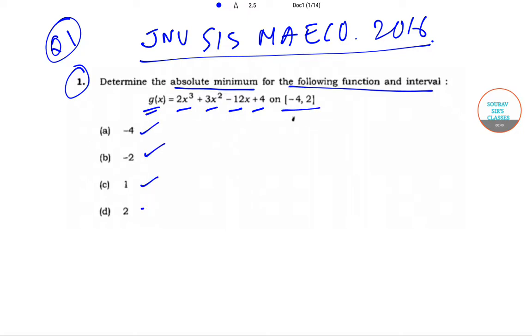So what we have been given, we need to find out the absolute minimum of g(x) on this interval [-4, 2]. g(x) is given as 2x³ + 3x² - 12x + 4.